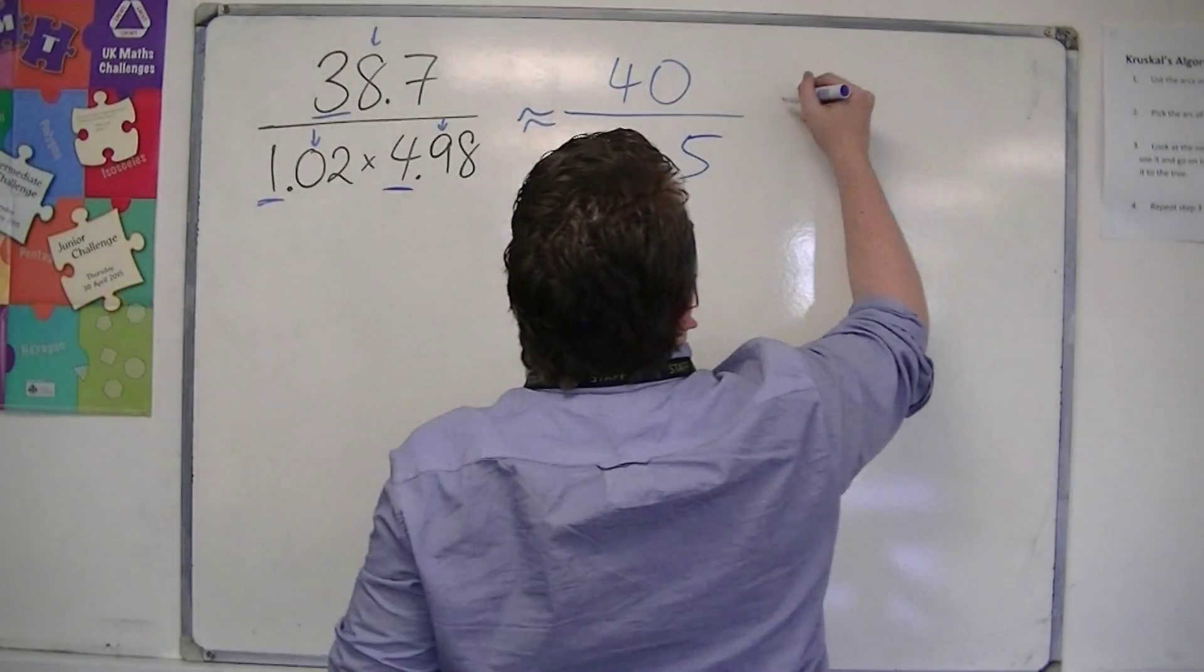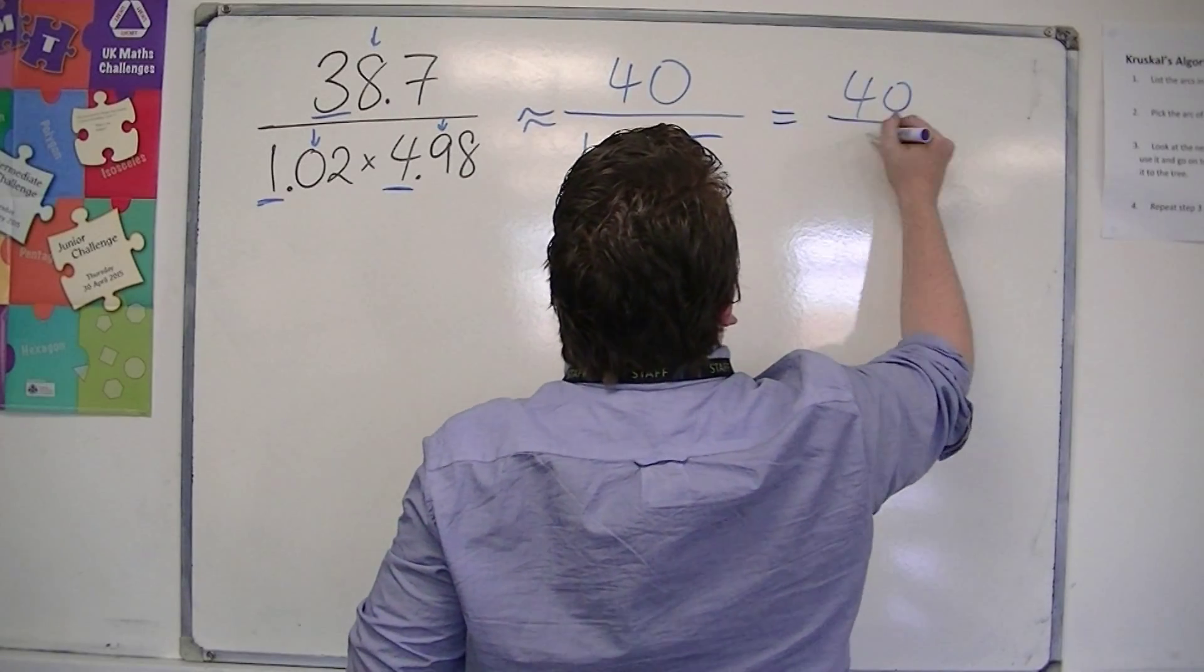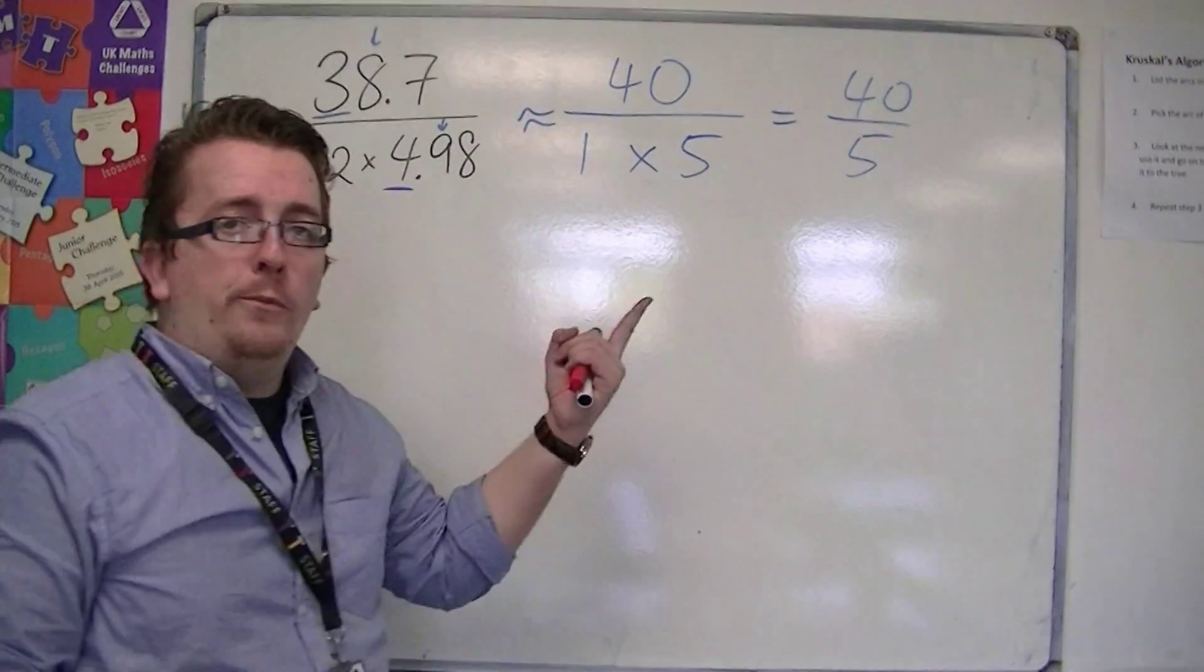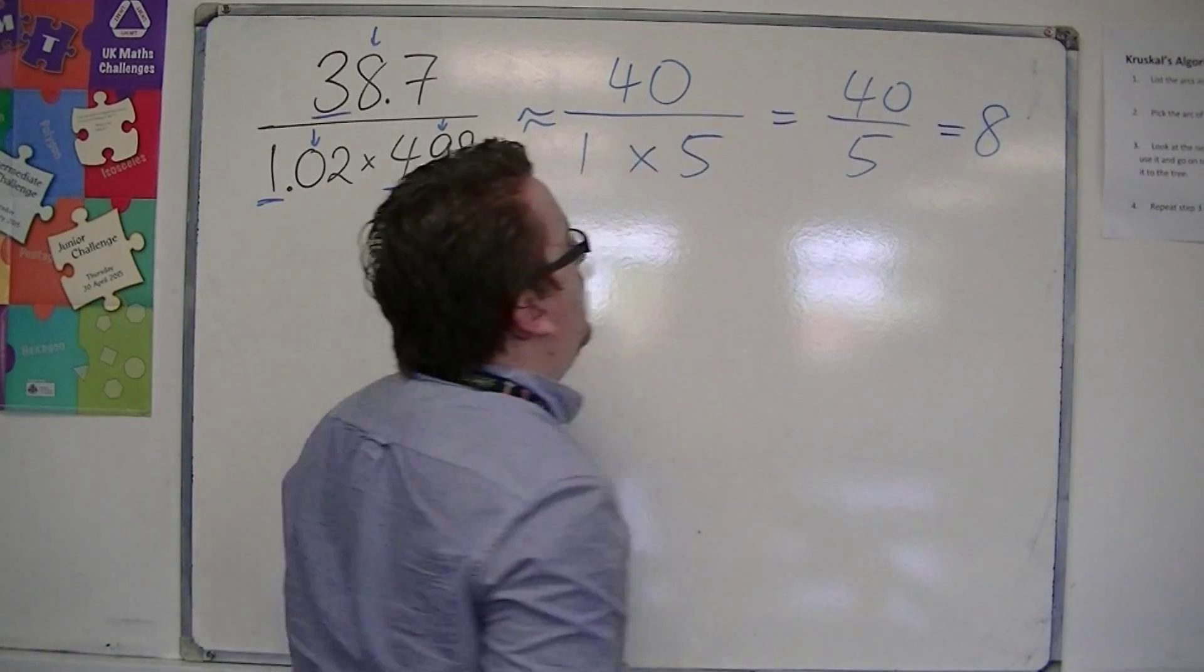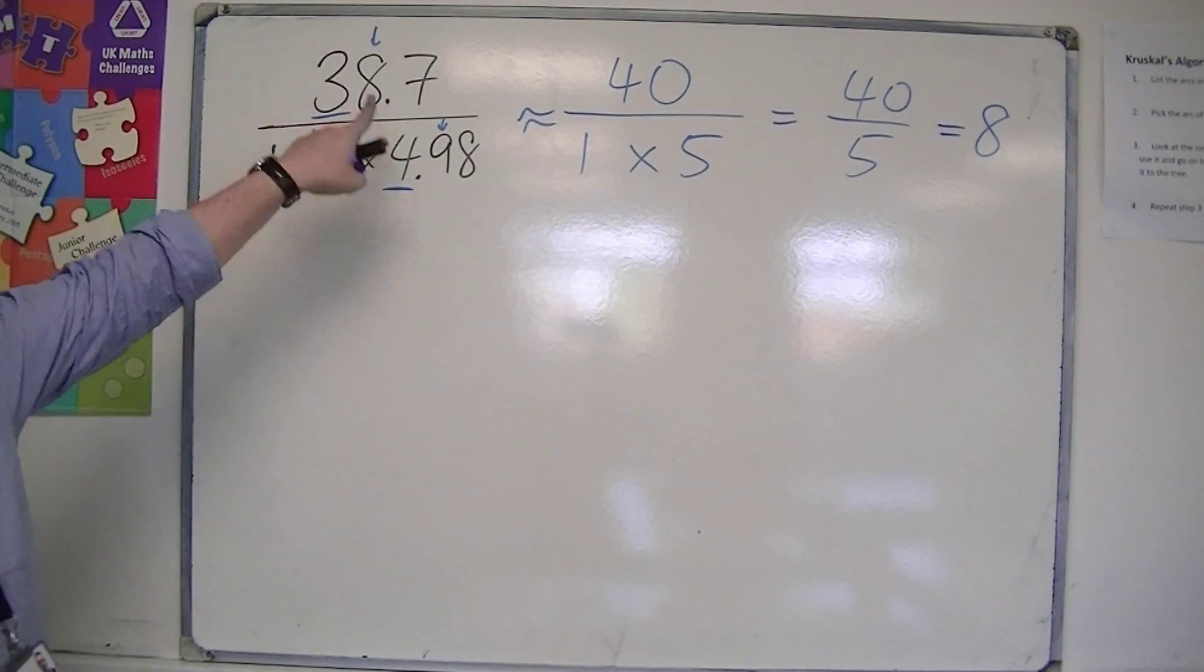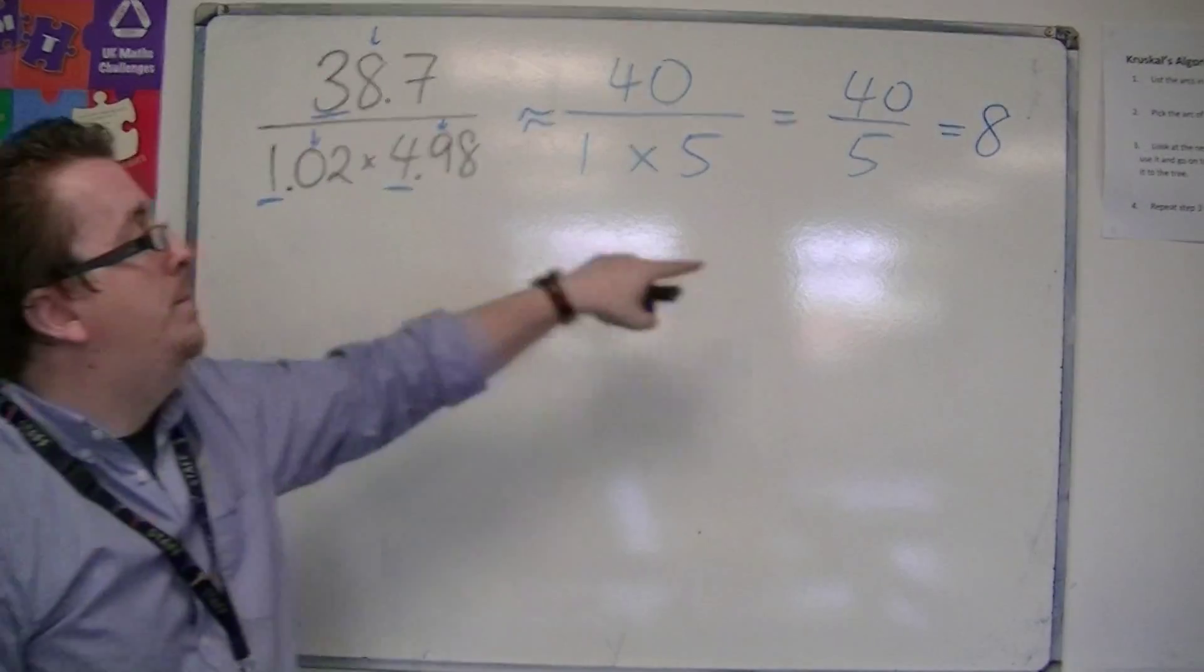So this is the same as 40 over 5, and it's top divided by bottom, so 40 divided by 5 is 8. So an estimate to this original question would be 8.